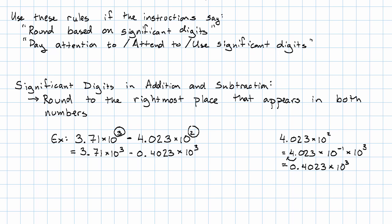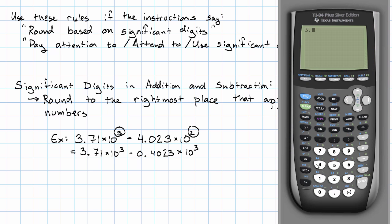So my original problem then becomes 3.71×10³ minus 0.4023×10³. Now I'm going to actually do that subtraction. I'm just going to go ahead and subtract on my calculator, taking 3.71 minus 0.4023.